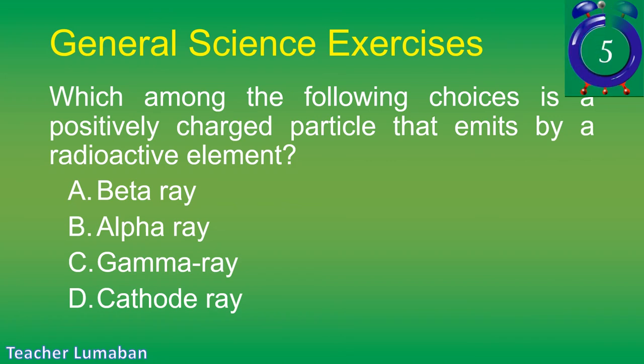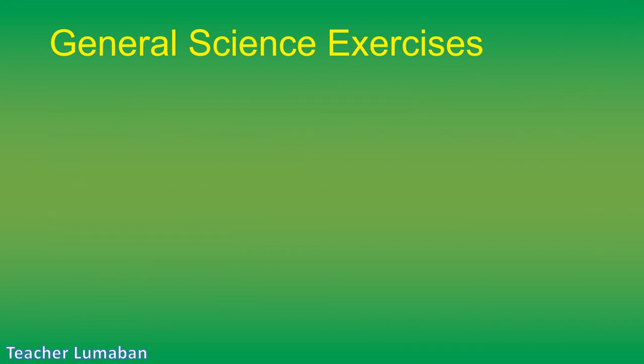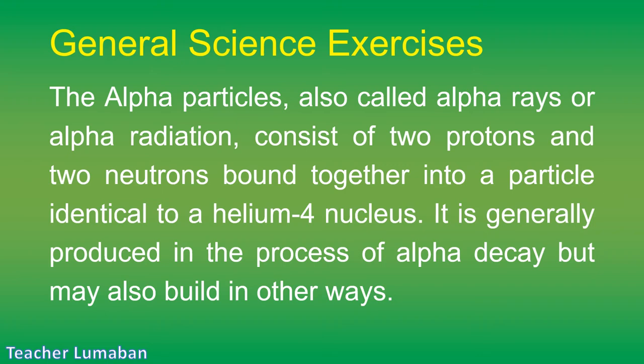The correct answer is Letter B: alpha ray. Alpha particles, also called alpha rays or alpha radiation, consist of two protons and two neutrons bound together into a particle identical to a helium-4 nucleus. They are generally produced in the process of alpha decay but may also be produced in other ways.